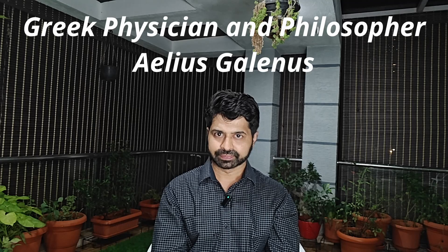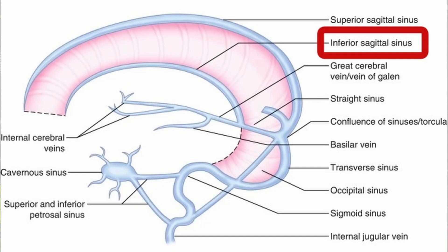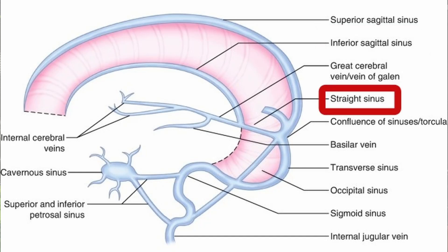Where does the vein of Galen drain? As it travels posteriorly, it joins with the inferior sagittal sinus, and together they form the straight sinus, which goes posteriorly along the tentorium to reach the torcula.